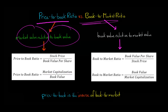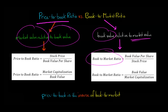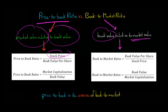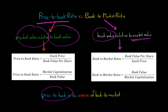The book-to-market ratio, on the other hand, tells you the book value relative to the market value. So now everything would be flipped. With the book-to-market ratio, instead of having stock price in the numerator and book value per share in the denominator, it's the other way around — you have the book value per share in the numerator and the stock price in the denominator. So you see that the price-to-book ratio is actually the inverse of the book-to-market ratio.